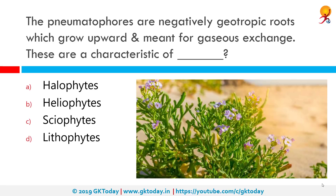Pneumatophores are negatively geotropic roots which grow upward and are meant for gaseous exchange. These are characteristics of halophytes. A halophyte is a salt-tolerant plant that grows in waters of high salinity, coming into contact with saline water through its roots or by salt spray, such as in saline semi-deserts, mangrove swamps, marshes, and seashores.